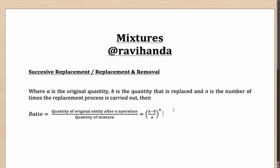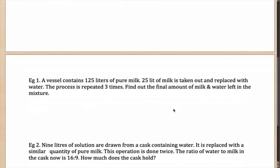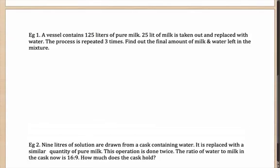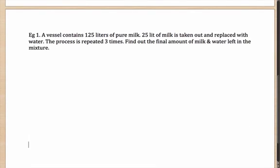Let us look at an example which might clarify things. Say you have a vessel which contains 125 liters of pure milk. 25 liters of milk is taken out and replaced with water. The process is repeated three times. Find out the final amount of milk and water left in the mixture. So initially, the original quantity A is 125 liters. How much are you replacing every time? 25 liters — and how many times is the process happening? Three times.